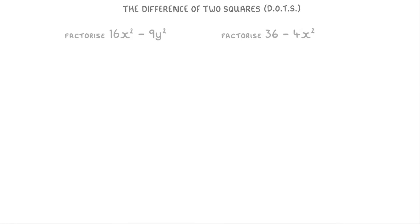Let's have a go at these two slightly harder ones now. This first one, 16x squared minus 9y squared, is a little bit different to the ones we've seen so far because the two terms contain numbers and letters this time.